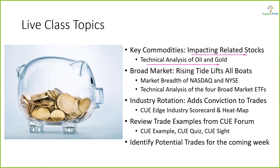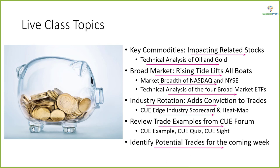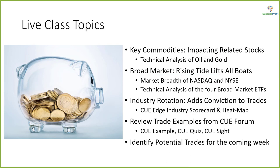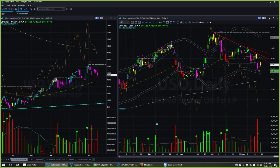As usual, we will analyze oil and gold using technical charts, as these two commodities tend to impact related stocks. When swing trading, we like to align trades with the broad market direction; we will study market direction using market breadth of NASDAQ and NYSE, and technical charts of four broad market ETFs. We also align swing trades with industry strength, studying that using industry scorecard and heat map. Along the way we may go through some recent examples from our traders forum and look for trades for the coming week.